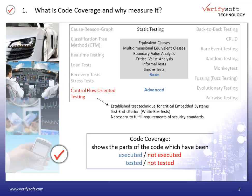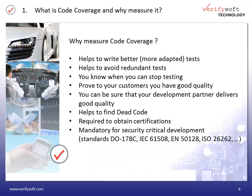Code coverage shows for all parts of your code whether they have been tested or not. With the coverage information you can then write more adapted test cases in order to cover the parts of the code which are not yet tested. Code coverage helps to avoid redundant test cases and save time and money. You know when you can stop testing. The goal is achieved when the required test coverage has been reached.